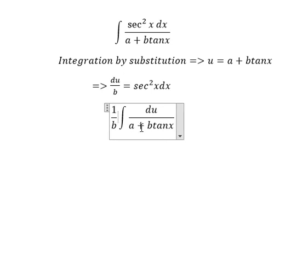Now we get 1 over b multiplied by ln of the absolute value of u plus C.